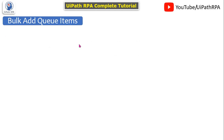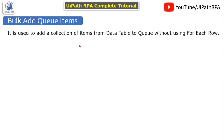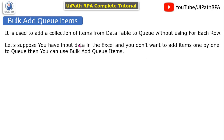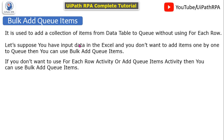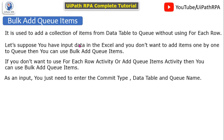Bulk Add Queue Items is one of the important activities of UiPath Queue. It is used to add a collection of items from a data table to a queue without using the For Each Row and Add Queue Item activities. If you have input data in Excel and don't want to add items one by one, you can use this activity. As input you just need to enter the commit type, data table, and queue name, and optionally take the output in Excel.